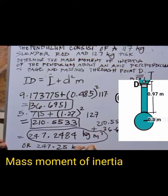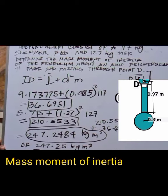The total mass moment of inertia is approximately 247.25 kg·m². This is the mass moment of inertia for the pendulum system.